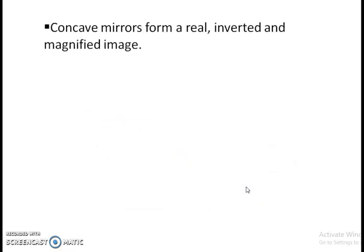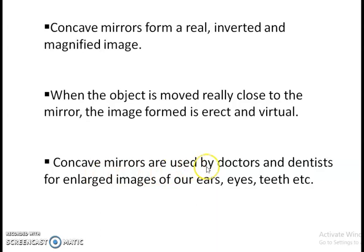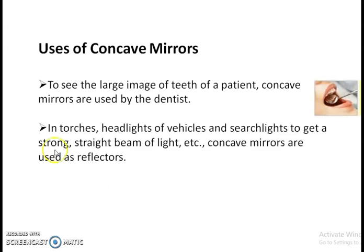A concave mirror will form a real, inverted, magnified image depending on how far the object is from the mirror. When the object moves very close to the mirror, the image formed will be erect and virtual. Concave mirrors are used by doctors and dentists to see the enlarged image of the ears, eyes, and teeth. They are also used in torches, headlights of vehicles, and search lights to produce a strong, straight beam of light.